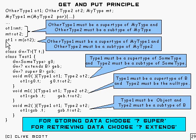And if we see something like that, what it means is that other type 1 must be a supertype of my type 1, and other type 2 must be a subtype of my type 2. OK, this is all pretty standard stuff, nothing unusual about that, I'm just pointing out really what is obvious.